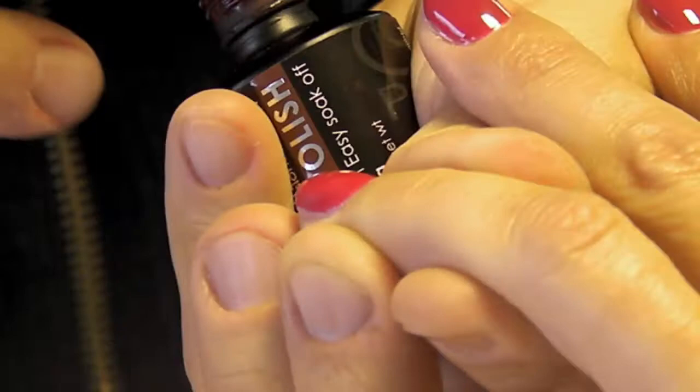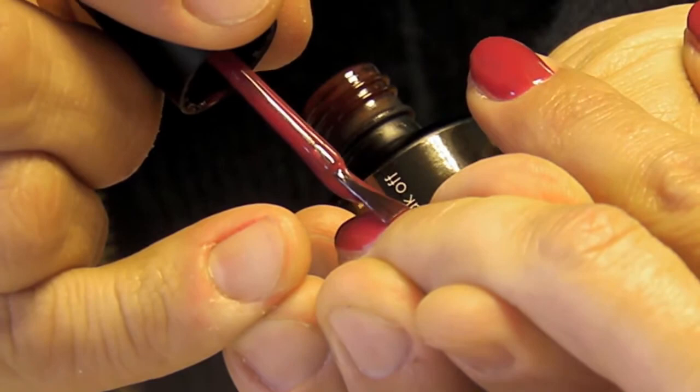Apply the second layer of gel polish color and be careful don't touch the cuticle and the skin. Cure for the second time.